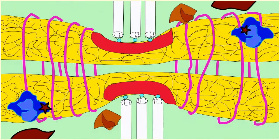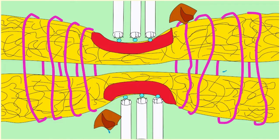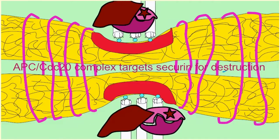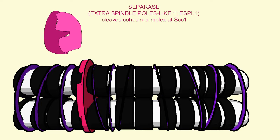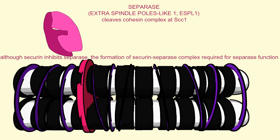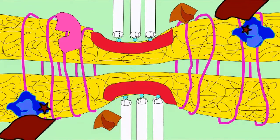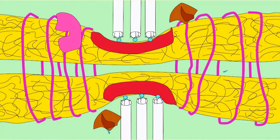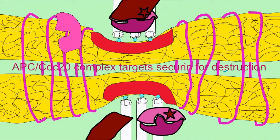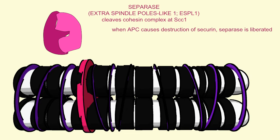Separase is inactivated as it is bound to securin to form a securin-separase complex. While these proteins are bound together, separase cannot act on the cohesin complex. The formation of this complex is required for separase to fold properly. So although securin inactivates separase, its binding to it is required for later separase action.